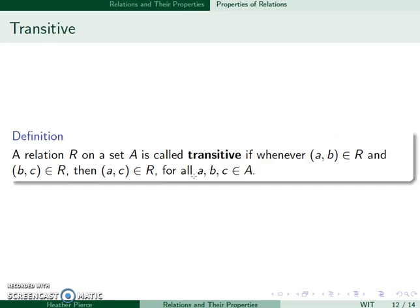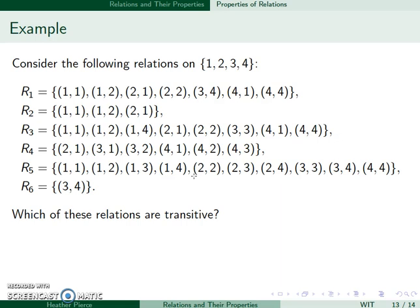My last property is called transitive. So this happens whenever A,B is in R and B,C is in R then A,C is in R for all A, B, and C. So this is the hardest one to check. For example, here I have 1,2 and 2,1. So when I combine these two I get 1,1. That's in there. I have 1,2 and 2,2 which would give me 1,2 which is in there. I have 2,1 and 1,2 which would combine to give me 2,2 which is in there.